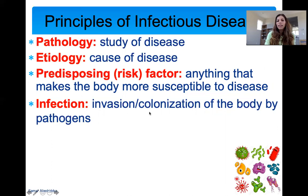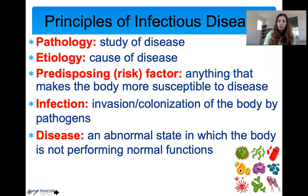Infection is defined as when the body has been colonized by the pathogen — meaning the microbes were able to replicate in the body and make copies of themselves. Disease is any abnormal state where the body is not performing normal function. Anytime something is affected — your lungs, your intestines, your skin — that's a state of disease.